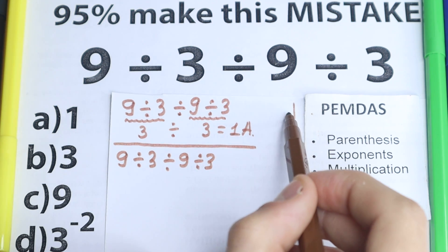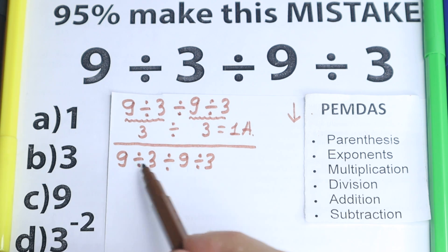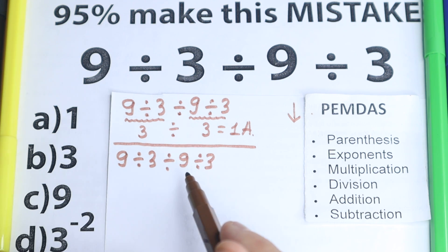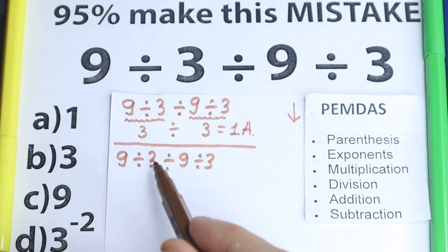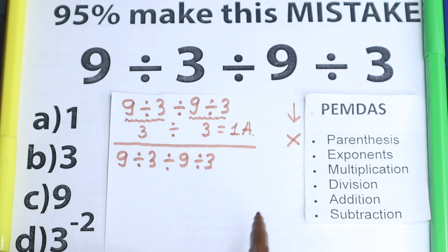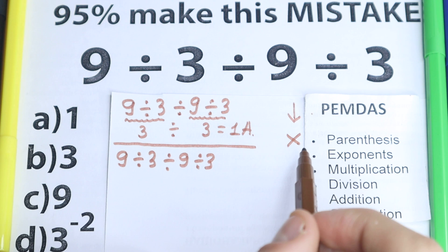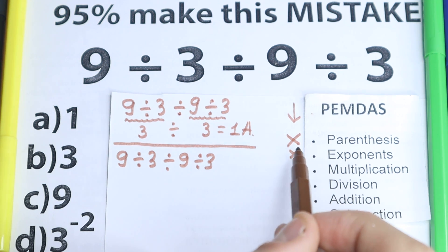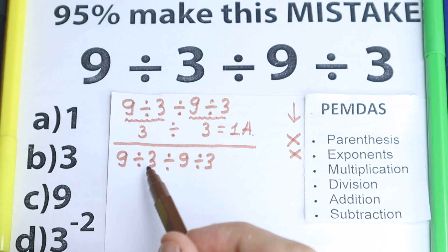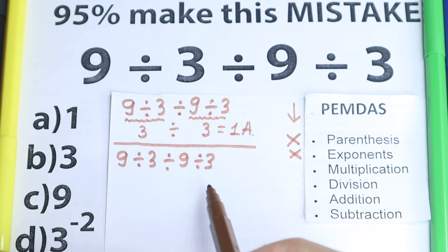PMDMC works from the top to the bottom, so let's go through the steps. First step: parentheses. Do we have any parentheses? I don't see any, so we skip this step — which is great, because parentheses would make it more complicated. Next: exponents. We don't have any exponents either, so we skip that step as well.